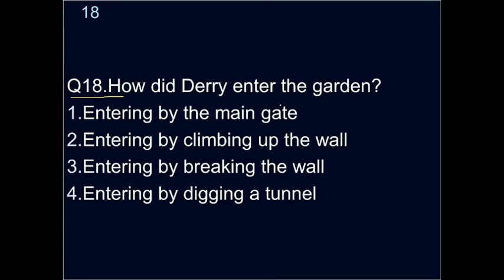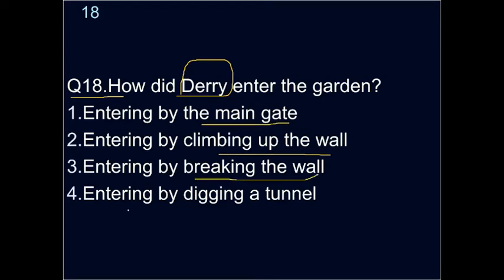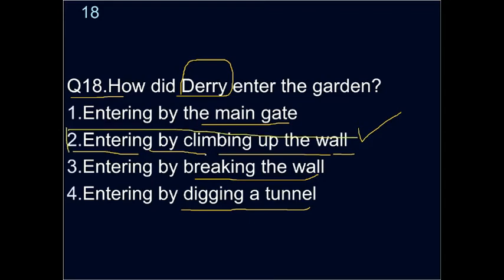Question eighteen: how did Derry enter the garden? Options are: by the main gate, by climbing up the wall, by breaking the wall, or by digging a tunnel. He entered by climbing up the wall — the outer boundary wall — second option is the correct one.